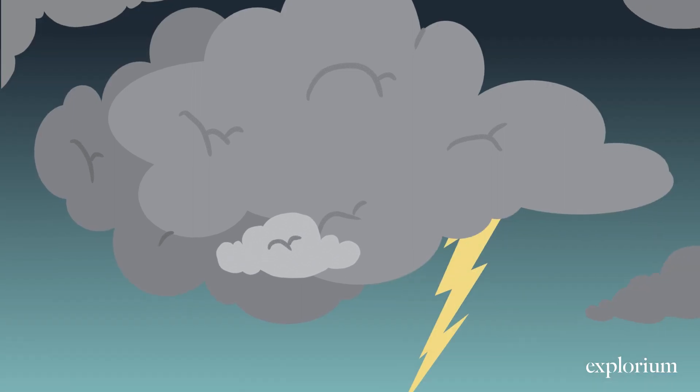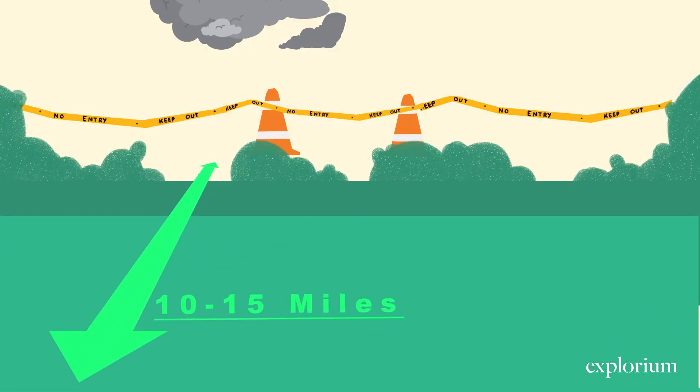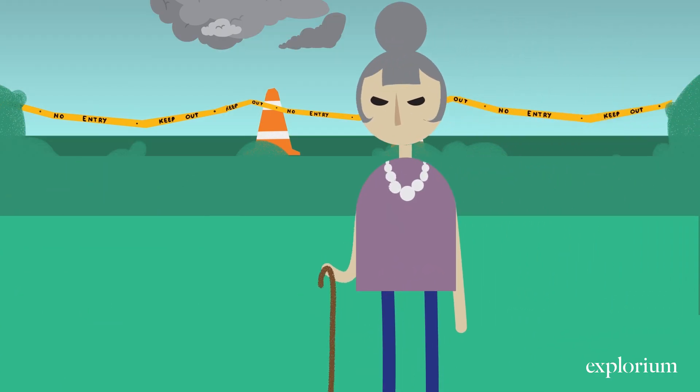You would think you are safe from lightning under clear blue skies, right? Wrong. Lightning can actually strike 10 to 15 miles from the storm.